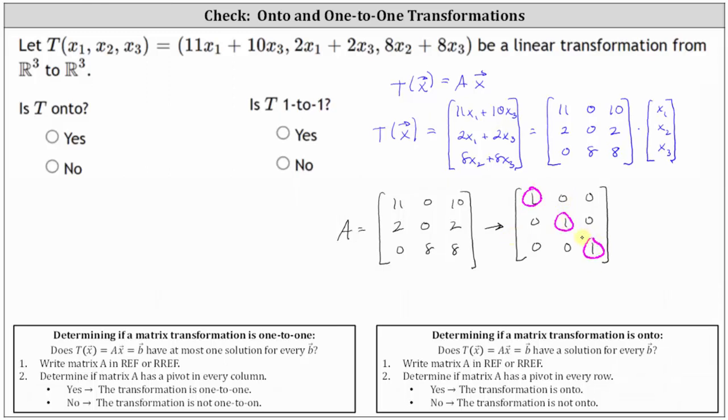Because we have a pivot in every column, we know the transformation is one-to-one. So we answer yes for one-to-one. We also have pivots in every row. And therefore the transformation is also onto. We answer yes for onto.